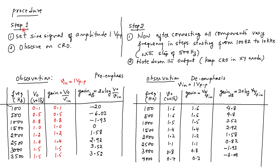In Step 1, we set the sine signal of amplitude 1 volt peak-to-peak and observe this signal on the CRO before applying it to the circuit. In Step 2, after connecting all the components, we vary the frequencies in steps starting from 100 Hz to 10 kilohertz with a step size of 500 hertz. Note down the output voltage by keeping the CRO in XY mode.